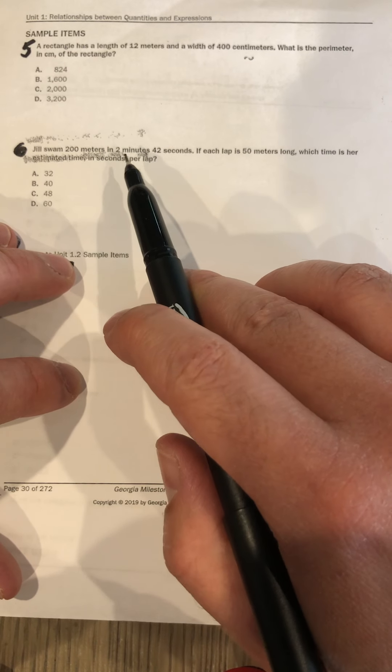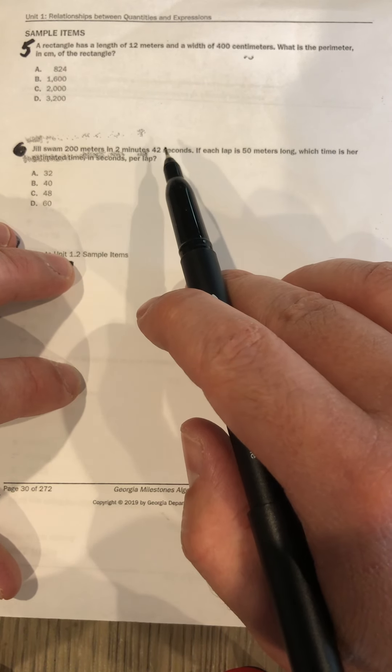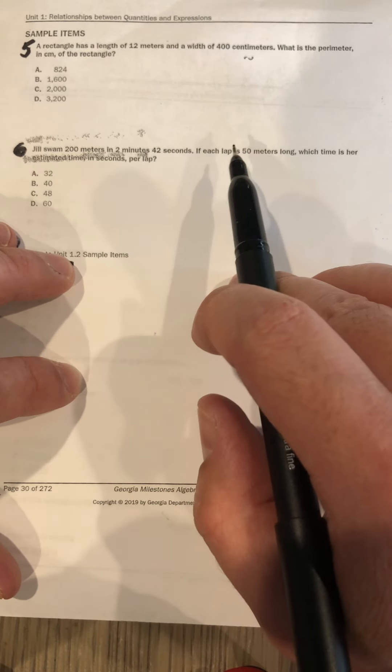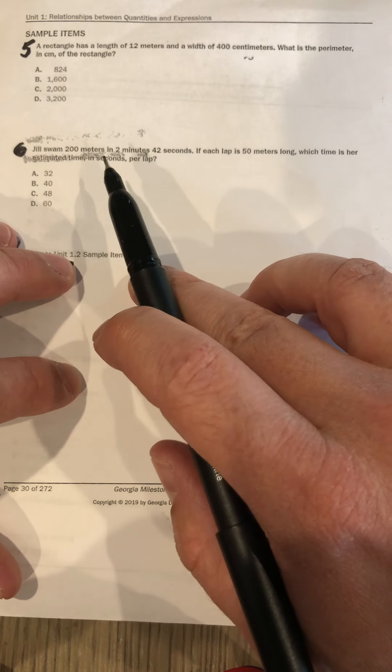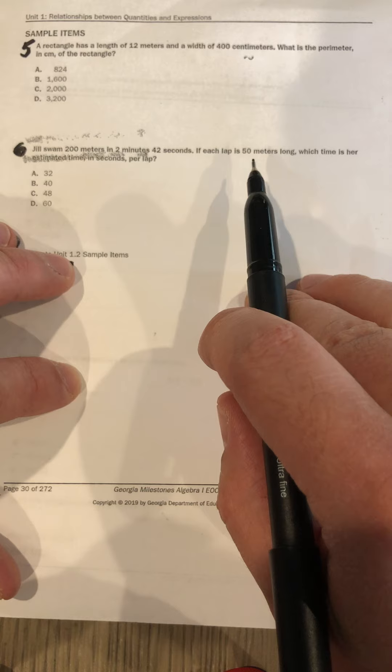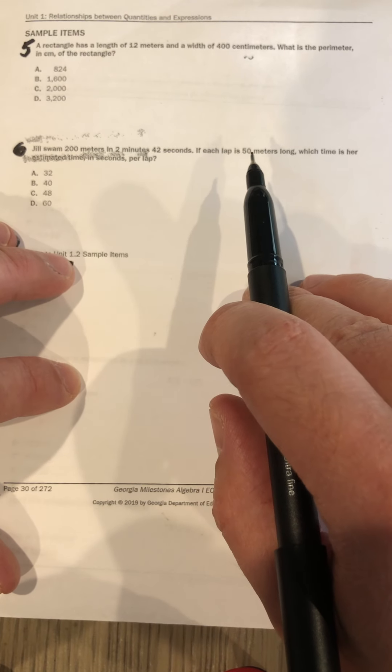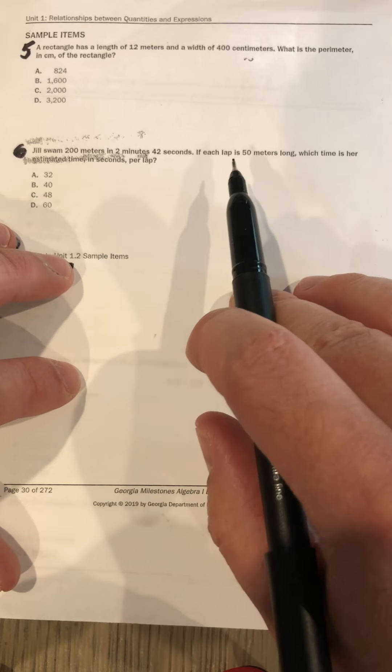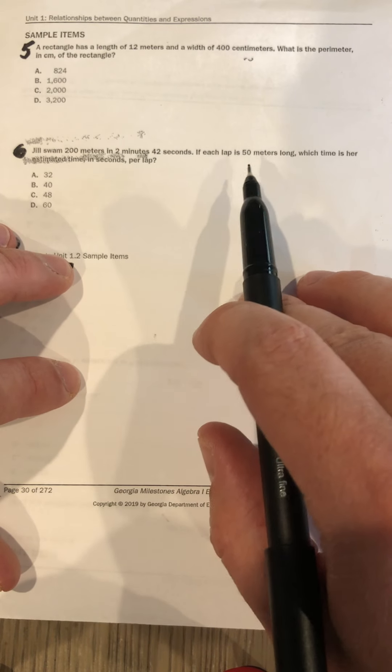Okay, and then see how many times—or well—the meters here, she swam 200 meters and each lap is 50 meters, so clearly that has to be four laps, right? Because four—got it—four laps, because it's 50.